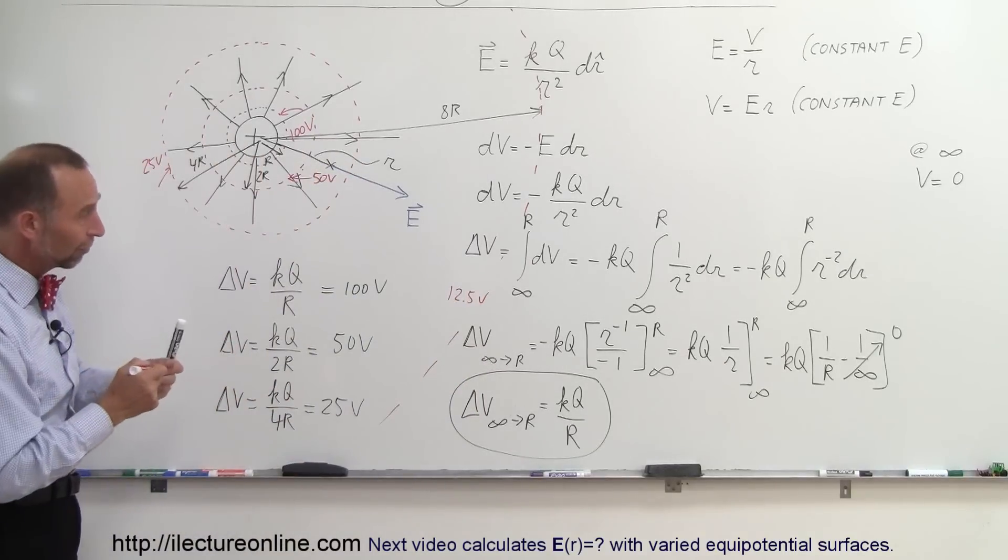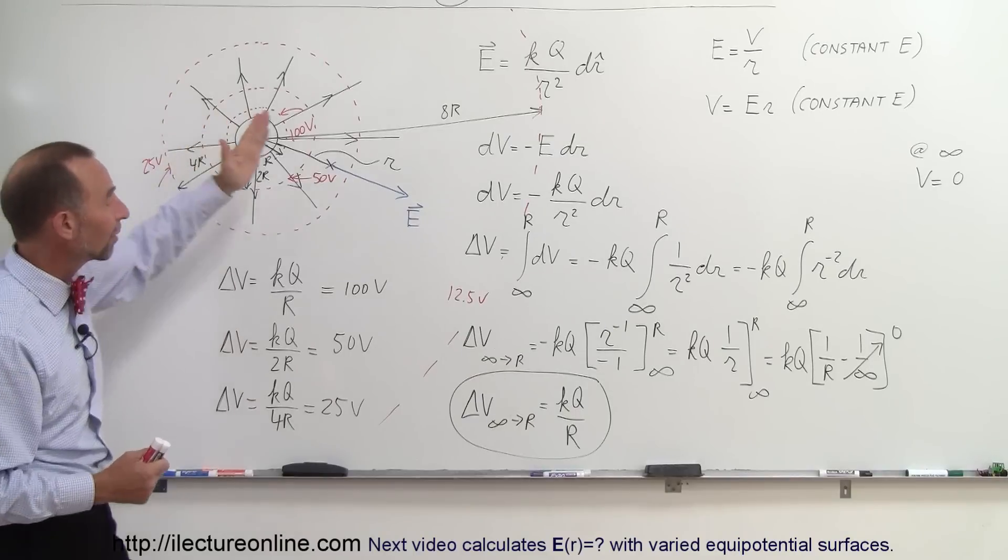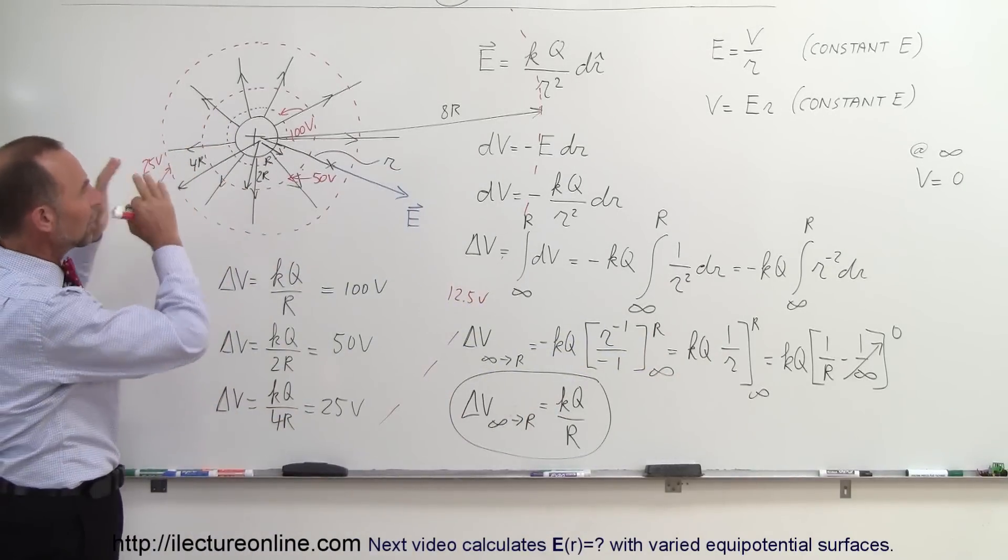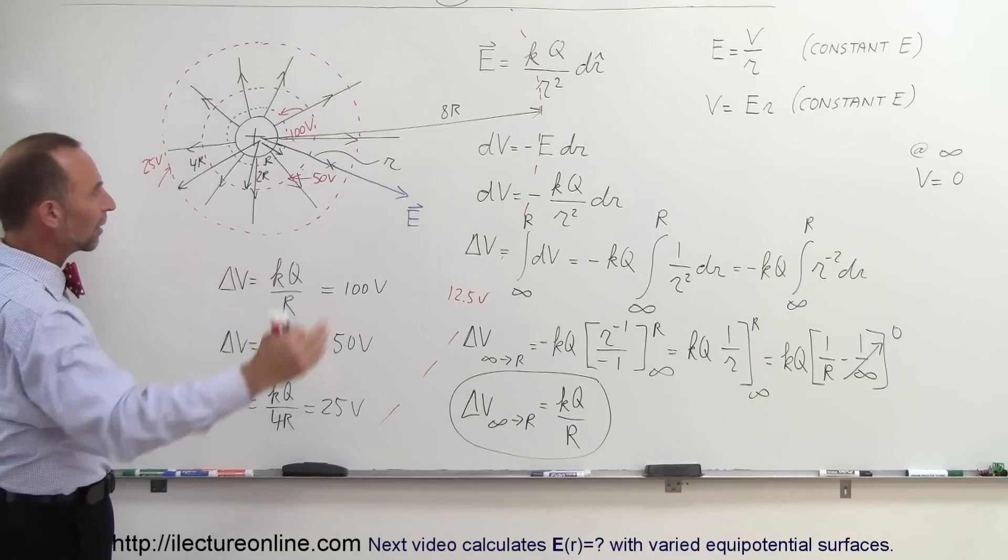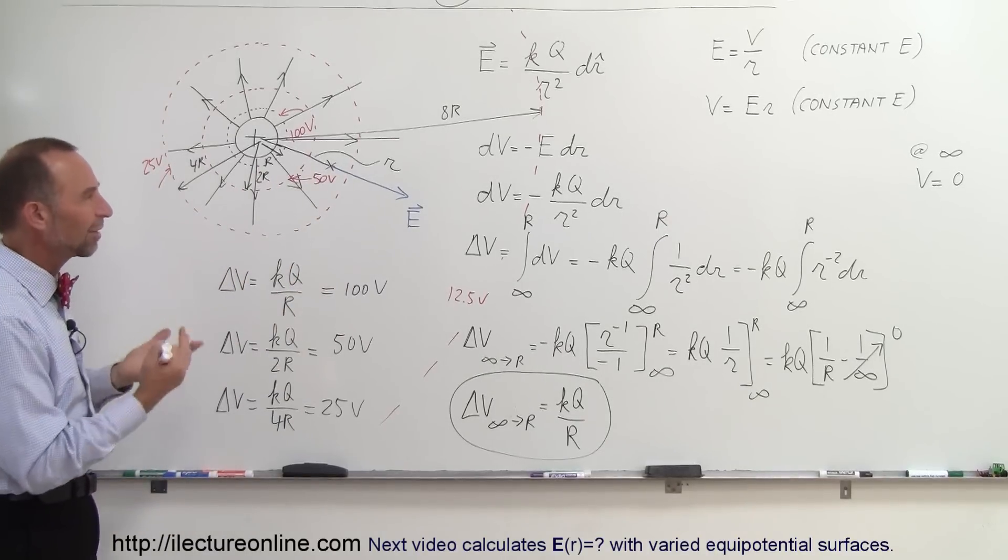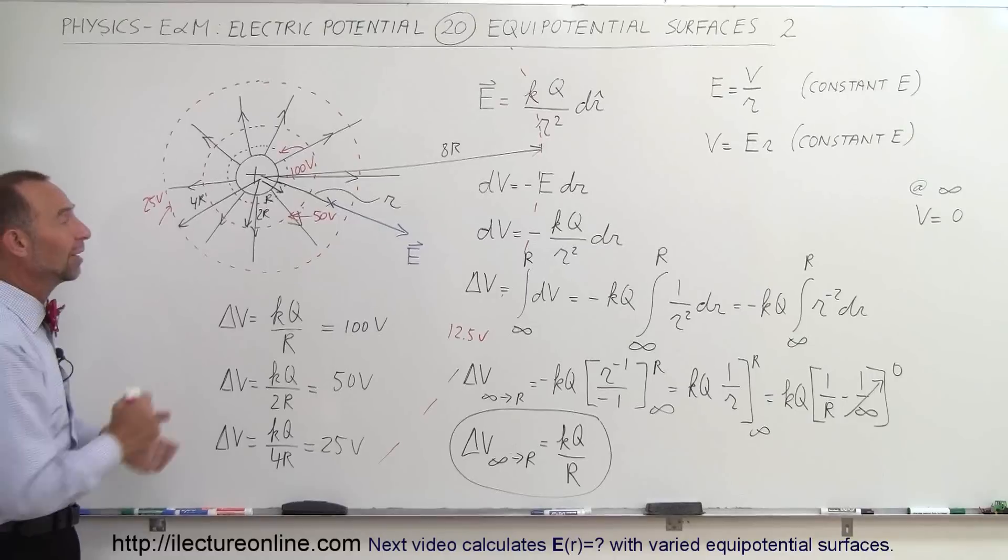Then how far do I need to go before the potential is half of that, 6.25 volts? I would now have to go out 16R and so forth. You can see that in this case the equipotential surfaces will be farther and farther apart each time when I want to go half the voltage that I had before, which gives you a good feel for what equipotential surfaces are and how to apply it to an example like this.